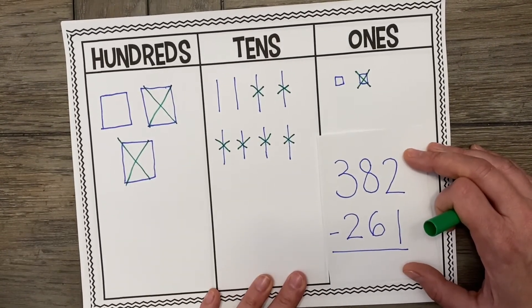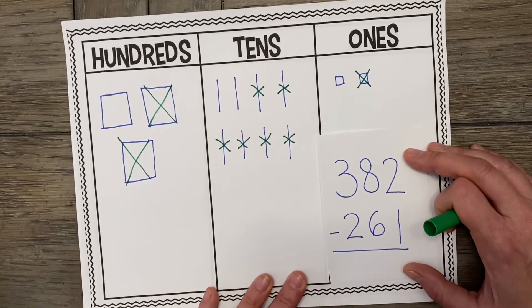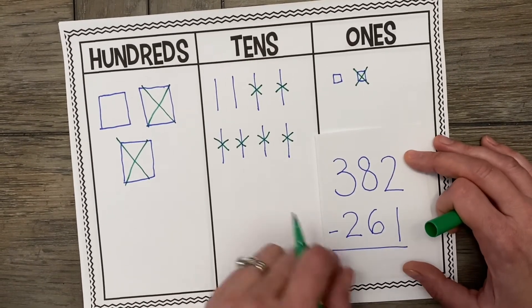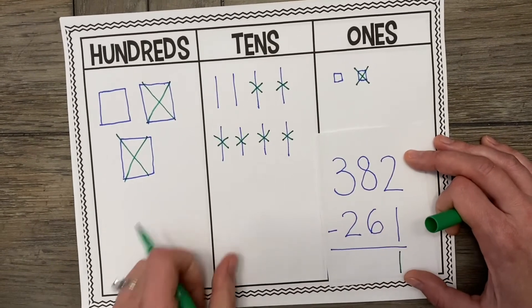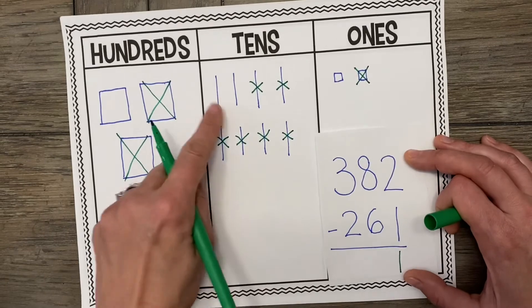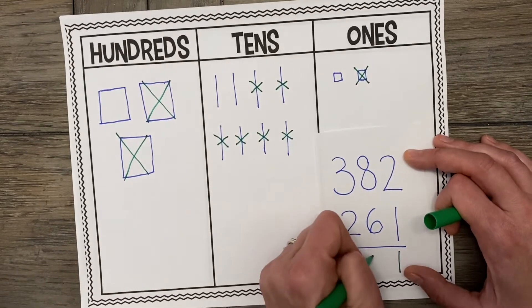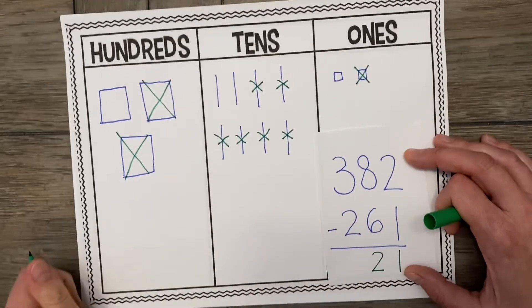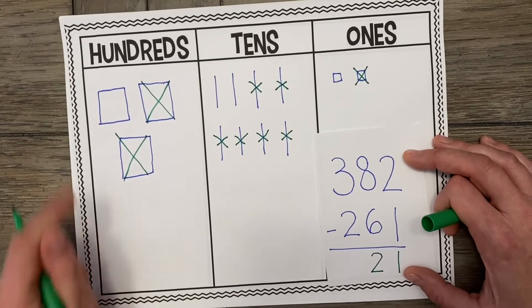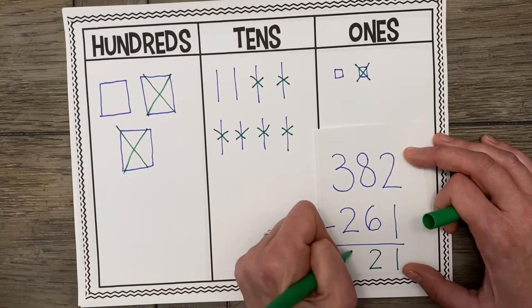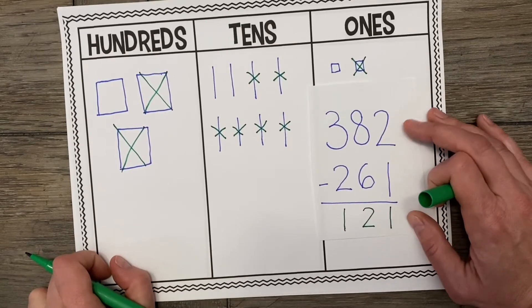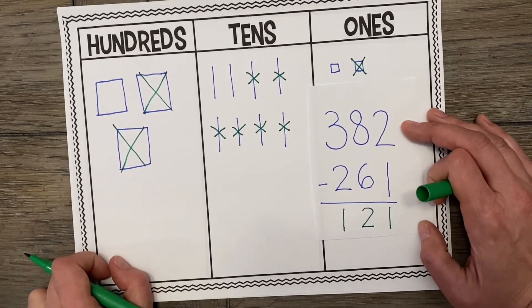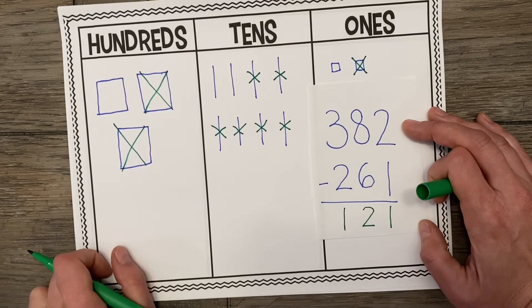Alright, now it's time for us to go ahead and count up what we have left. So how many 1s do we have left? That's right, we just have 1, 1 left. How many 10s do we have left? 1, 2. 2 tens. And how many 100s do we have left? Just 1. So our answer to 382 minus 261 is 121.